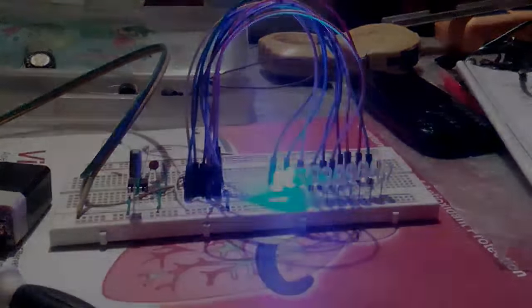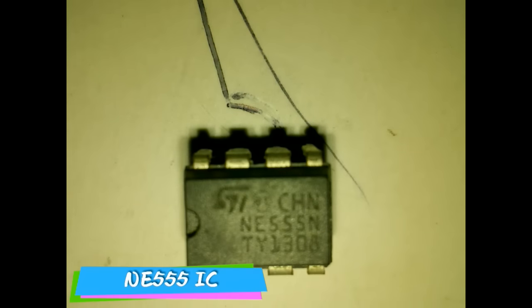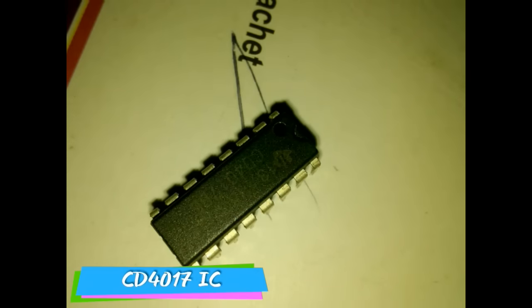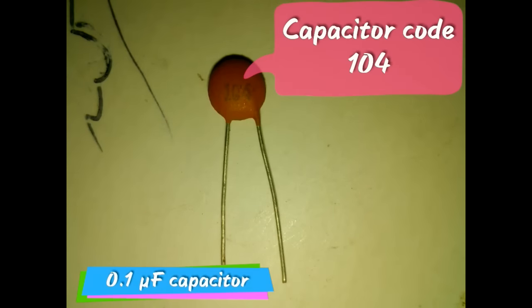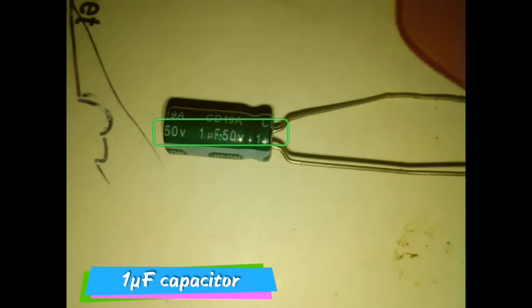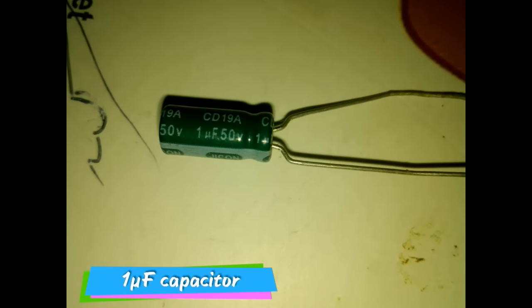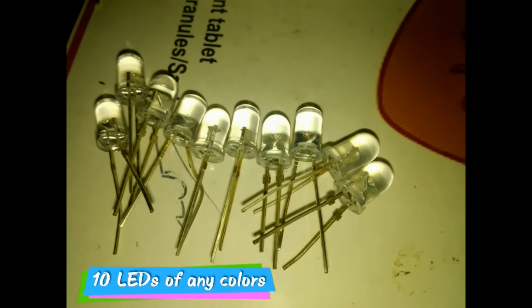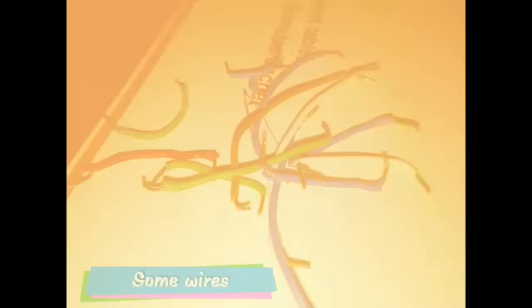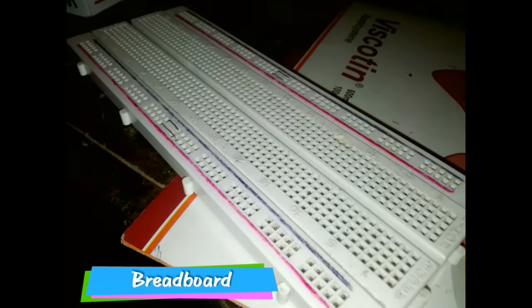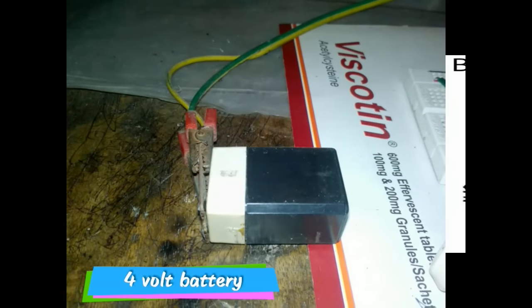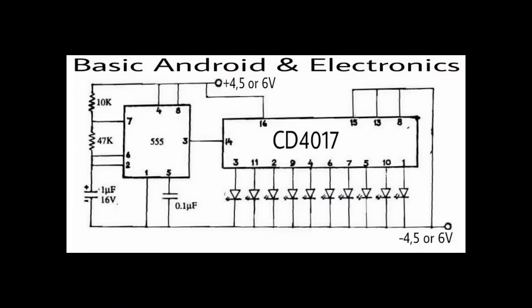NE555 IC, 4017 IC, 10K resistor, 47K resistor, 0.1 UF ceramic capacitor, 1 UF electrolytic capacitor, 10 LEDs of any colors, some wires, a breadboard and a 4 volt battery. This is the circuit diagram.